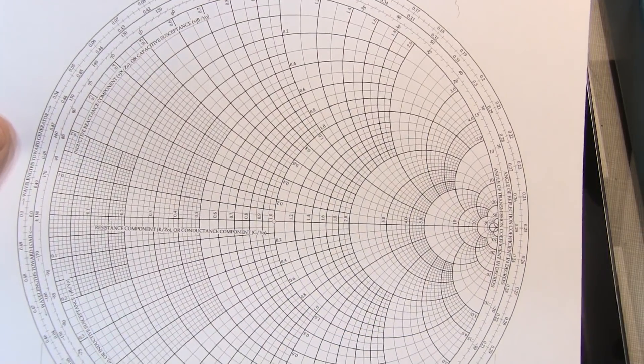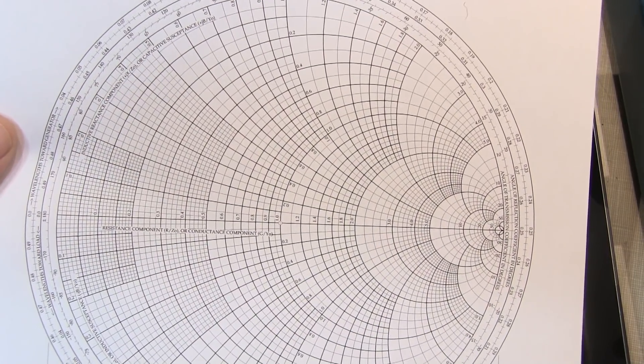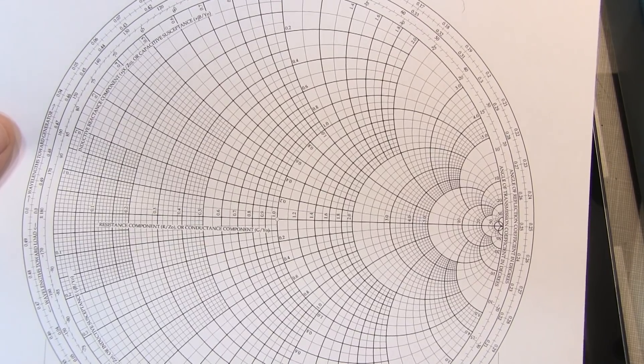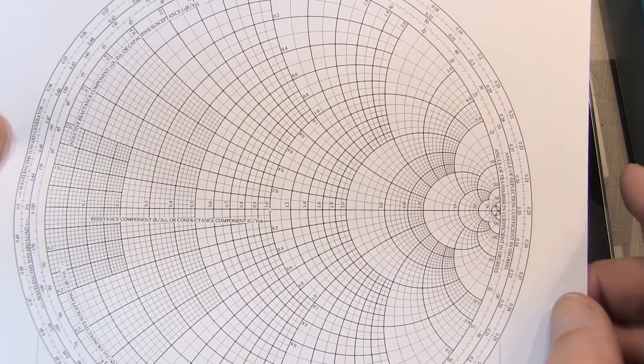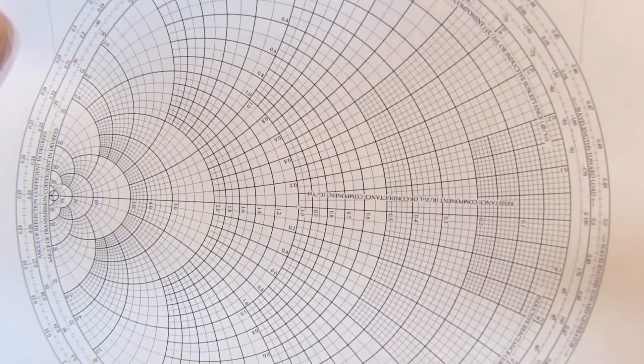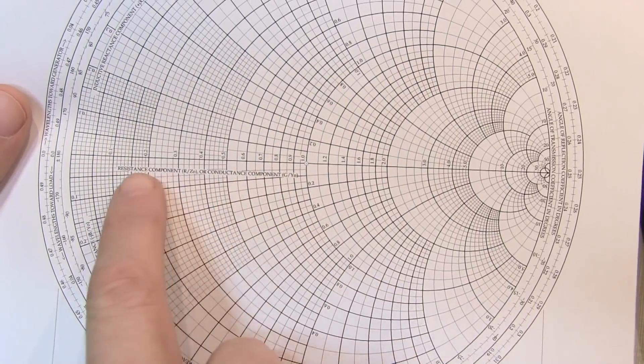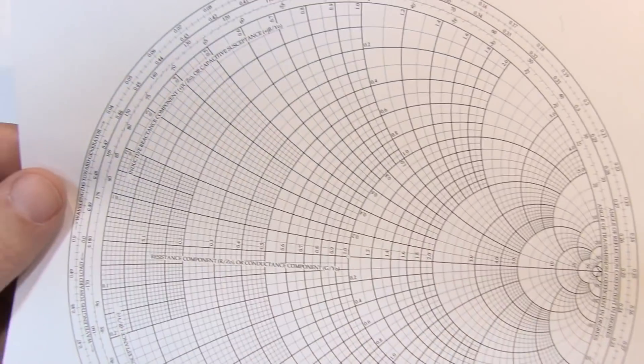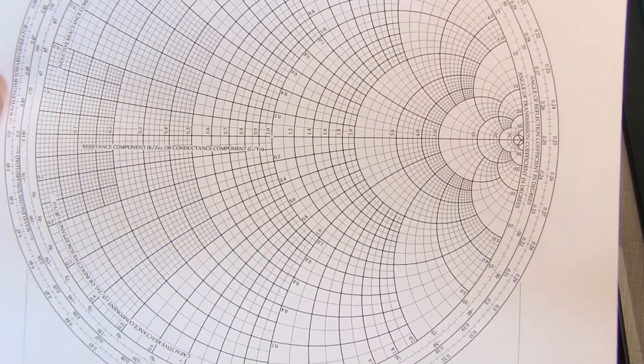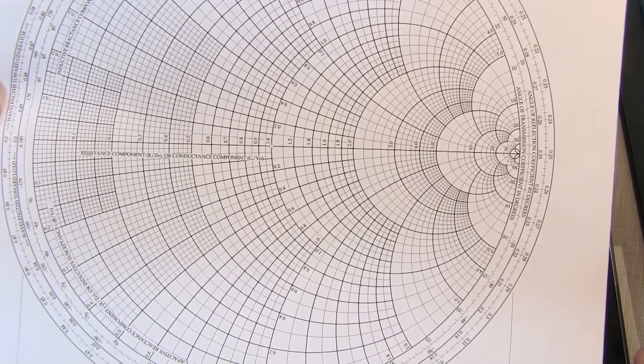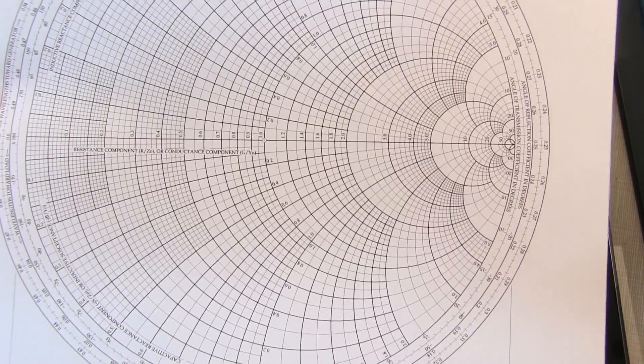You may have noticed that all the Smith charts I've shown you don't have the admittance curves on them. They only have the impedance curves. Of course, we turn the chart upside down, and now these curves are all the admittance curves. Now you don't really have to do that. The axes are labeled both ways with the impedance and admittance components, and there's actually a little bit of a graphic trick to do the conversion between them. Let me show you a quick example.